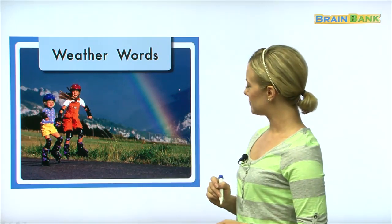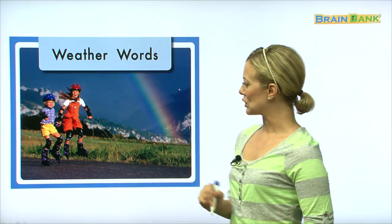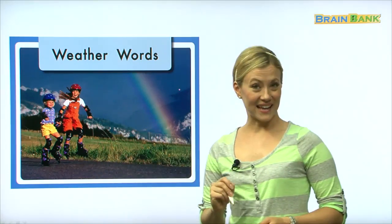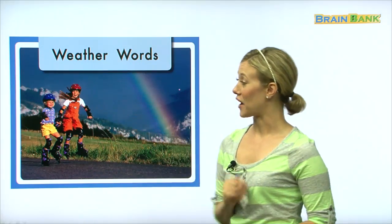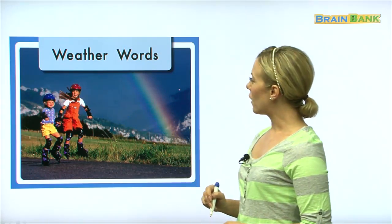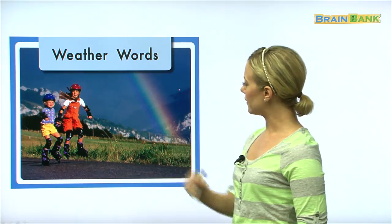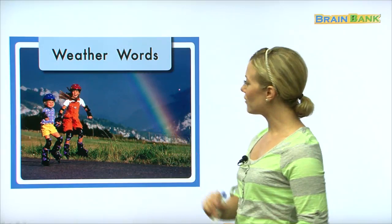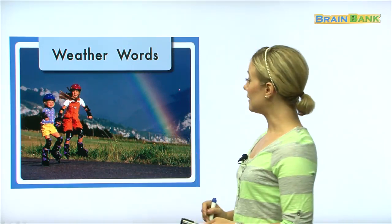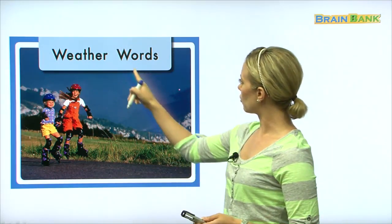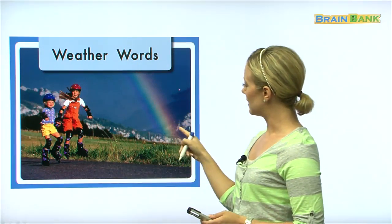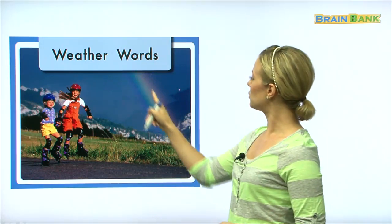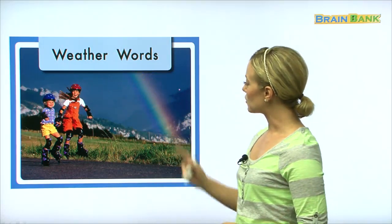So what do we see here? We see two girls, and it looks like they are roller skating, and they look like they're having a good time. Now how's the weather in this picture? Yes, the weather looks very nice. It looks sunny. And there's a rainbow in the sky. So maybe we just finished a storm, because there's a beautiful rainbow in the sky.